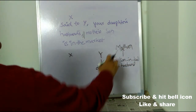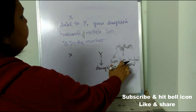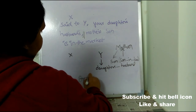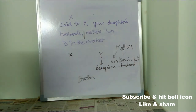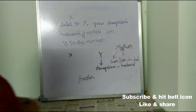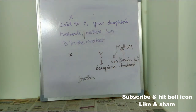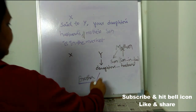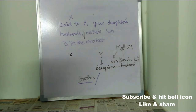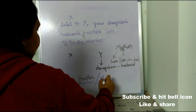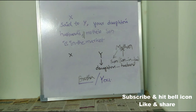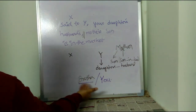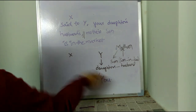Son-in-law's mother's son — there are two cases. If this mother has more than one son, then it will be son-in-law's brother, meaning your brother. But if the mother has only one son, it will be you. So X is saying to Y: 'I met your brother at the market, or you at the market.'